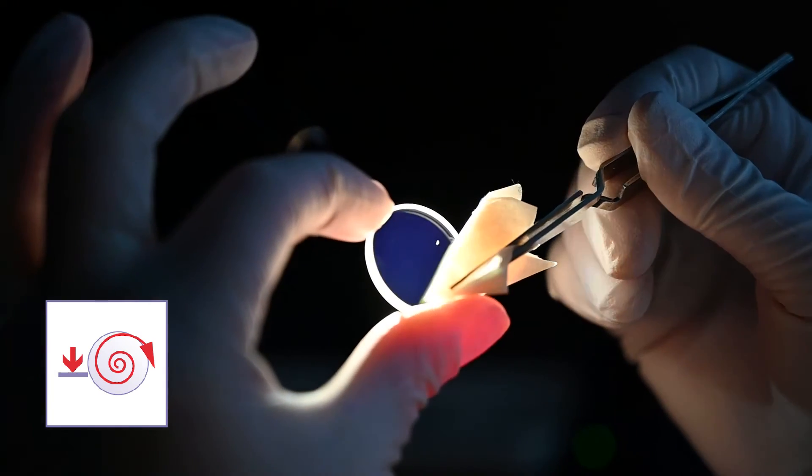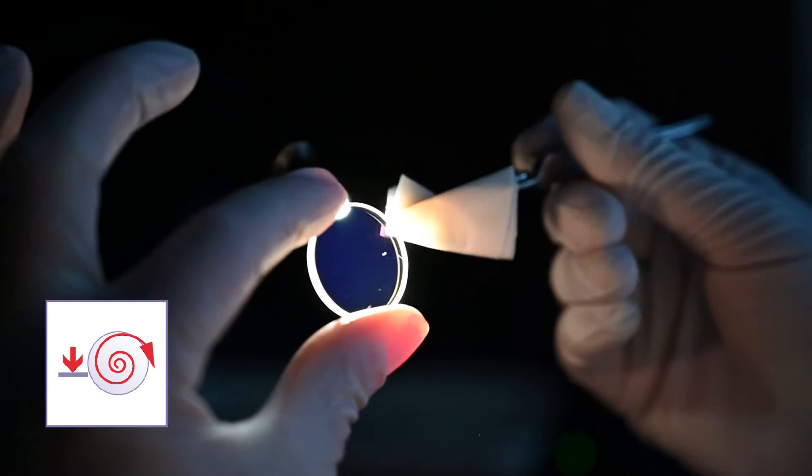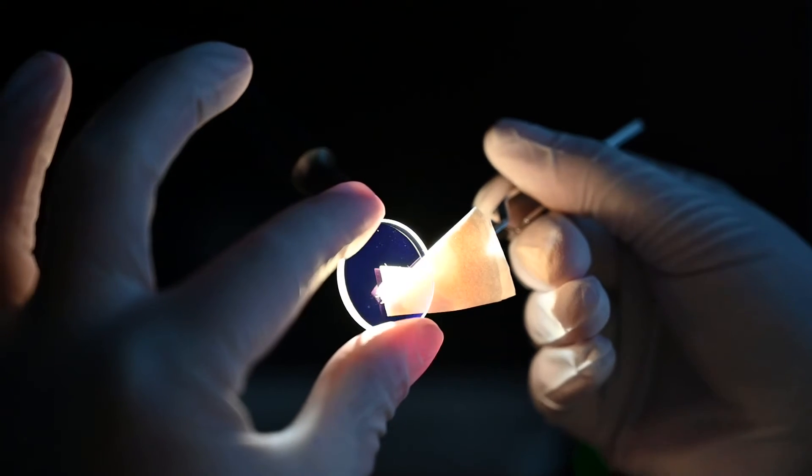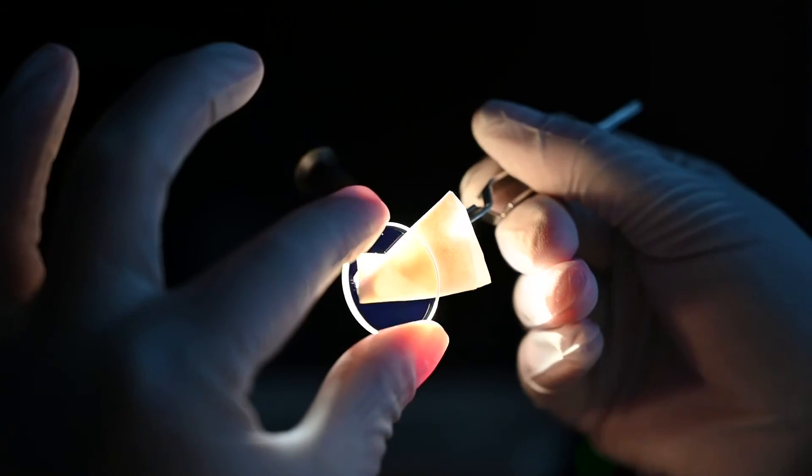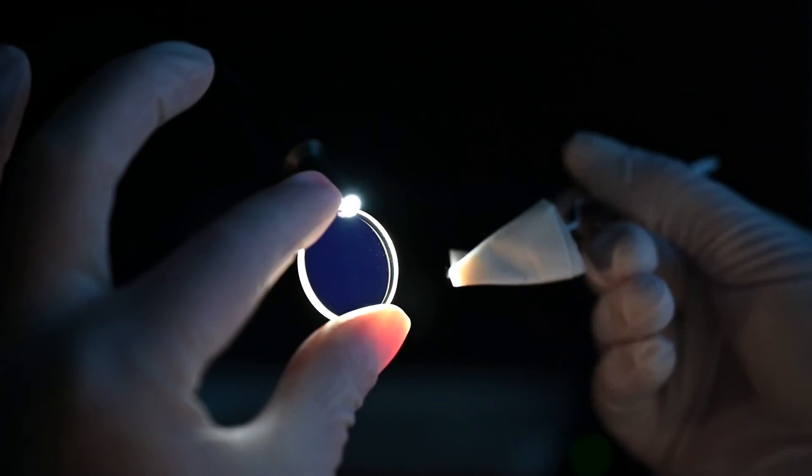Continue to inspect the optics during cleaning. Tilt and pan them at a flat angle to the light. If there are still imperfections on the optics, repeat the cleaning process.